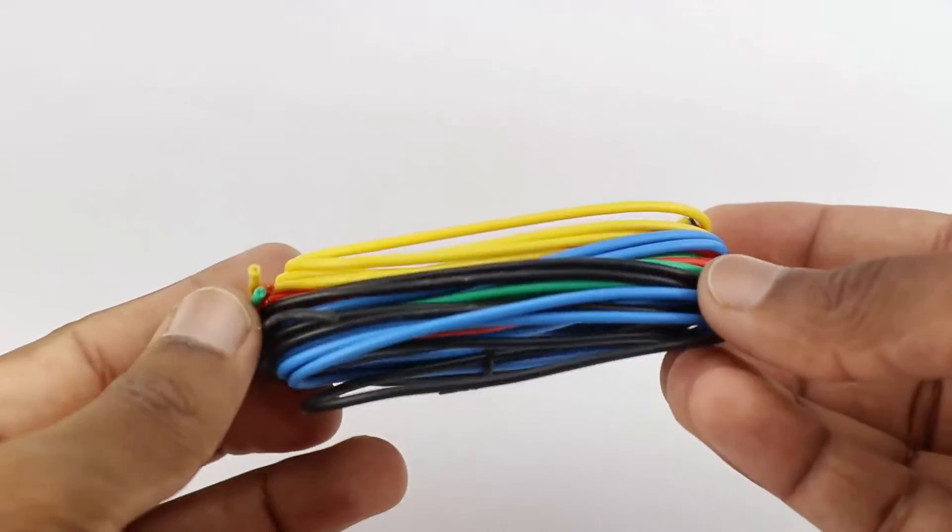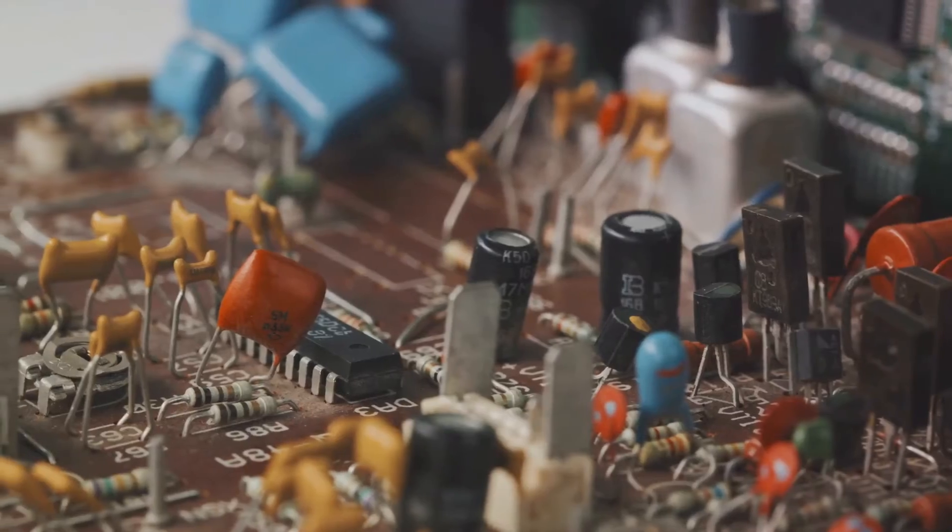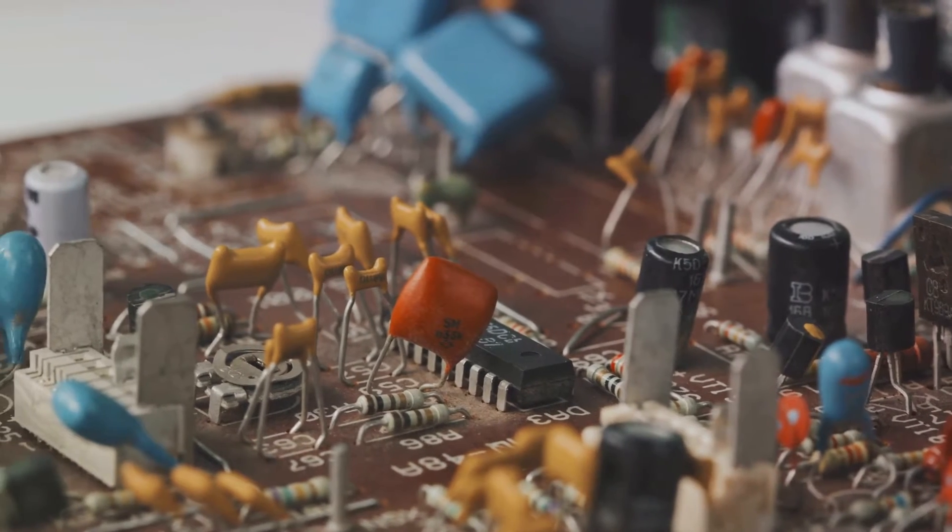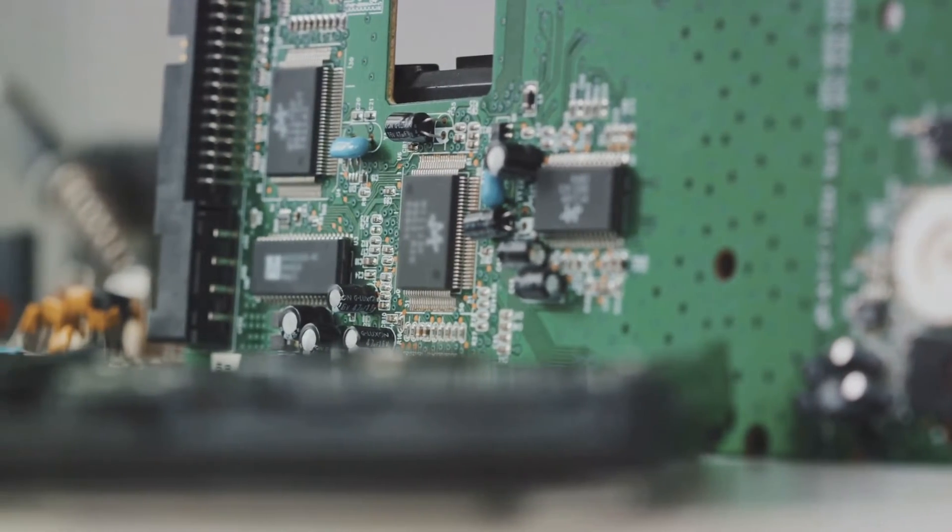These wires find their applications in a plethora of devices that we use every day. From our smartphones, which use them for compass applications, to our cars for determining the wheel speed, and even in our computers to monitor fan speed, Hall sensor wires are everywhere.